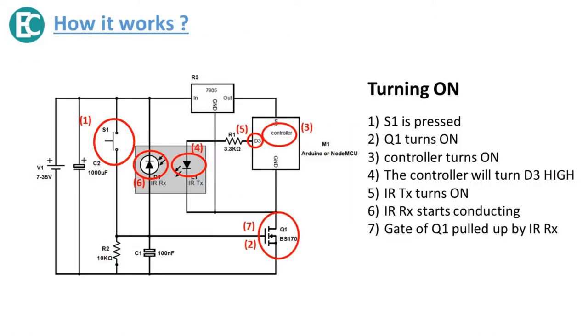Now let us see how it works. For turning on, first we press switch S1. Then the gate of MOSFET BS170 will be pulled up, hence that MOSFET starts conducting. So the controller will start, and in the program of the controller, D3 will become high. And hence the IR transmitter starts glowing, and hence the IR receiver will pull up the gate of transistor Q1.